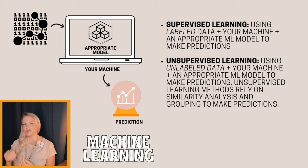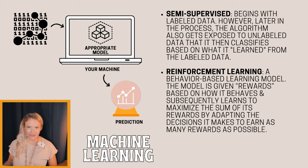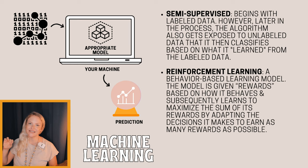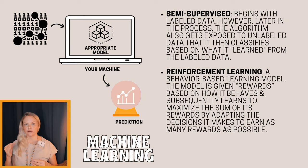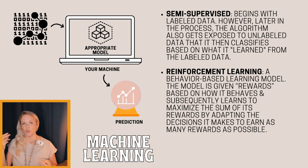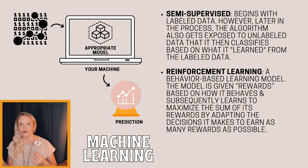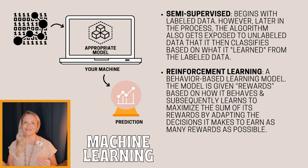The third type is semi-supervised learning, where you start with labeled data to train your model to a high degree of accuracy, and then introduce unlabeled data so the model can make predictions and classifications based on what it learned. The fourth type is reinforcement learning — a behavioral learning method where the model is given incentives and rewards when it makes a prediction that moves it closer to a defined outcome goal, so it tries to maximize the sum of its rewards by adapting its decisions.